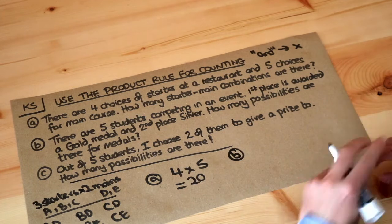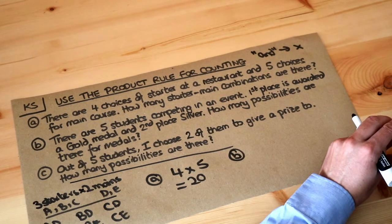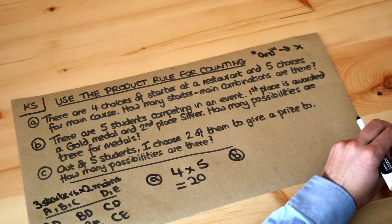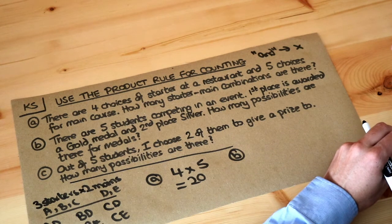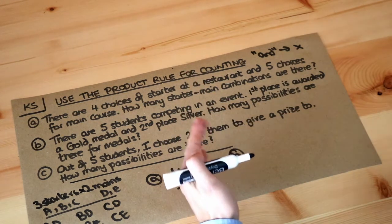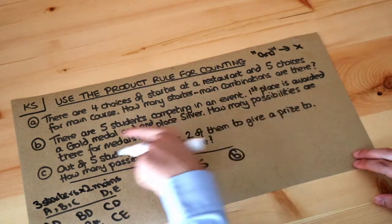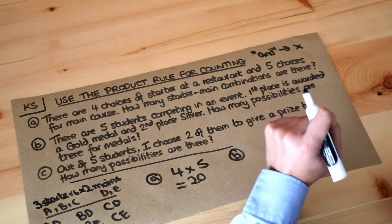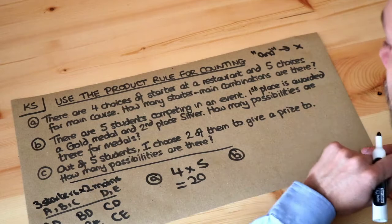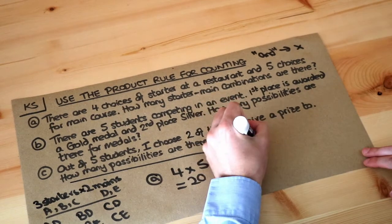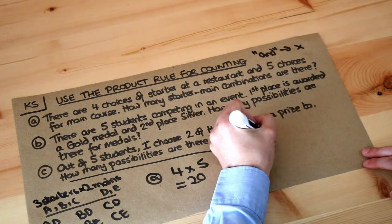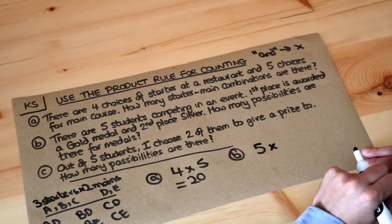What about the second one? There are five students competing in an event. First place is awarded a gold medal and second place silver. How many possibilities are there for medals? Well let's think about the first thing and then the second thing. For first place we give a gold medal, so how many possibilities are there for giving up the gold medal? Well you've got one of five students to choose from, so we've got five choices for the gold medal, and we're also picking a silver medal.